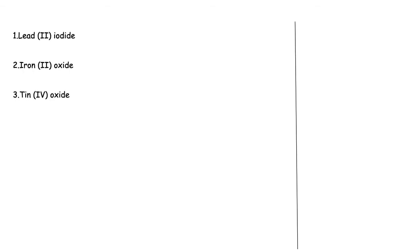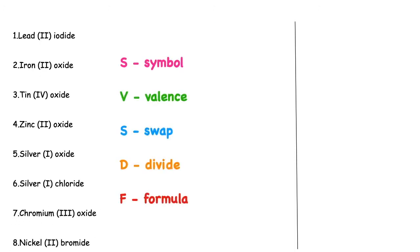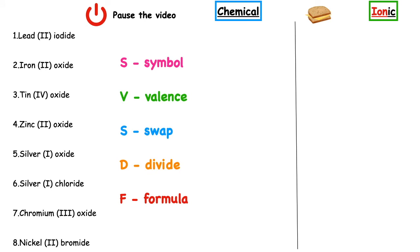Here are eight examples of transition metal compounds that you can have a go at writing the chemical and ionic formula for. These all end in -IDE, so they only contain two elements, and you can use your data booklet to help you. Pause the video to have a go, and when you're ready press play and the answers will appear on screen.